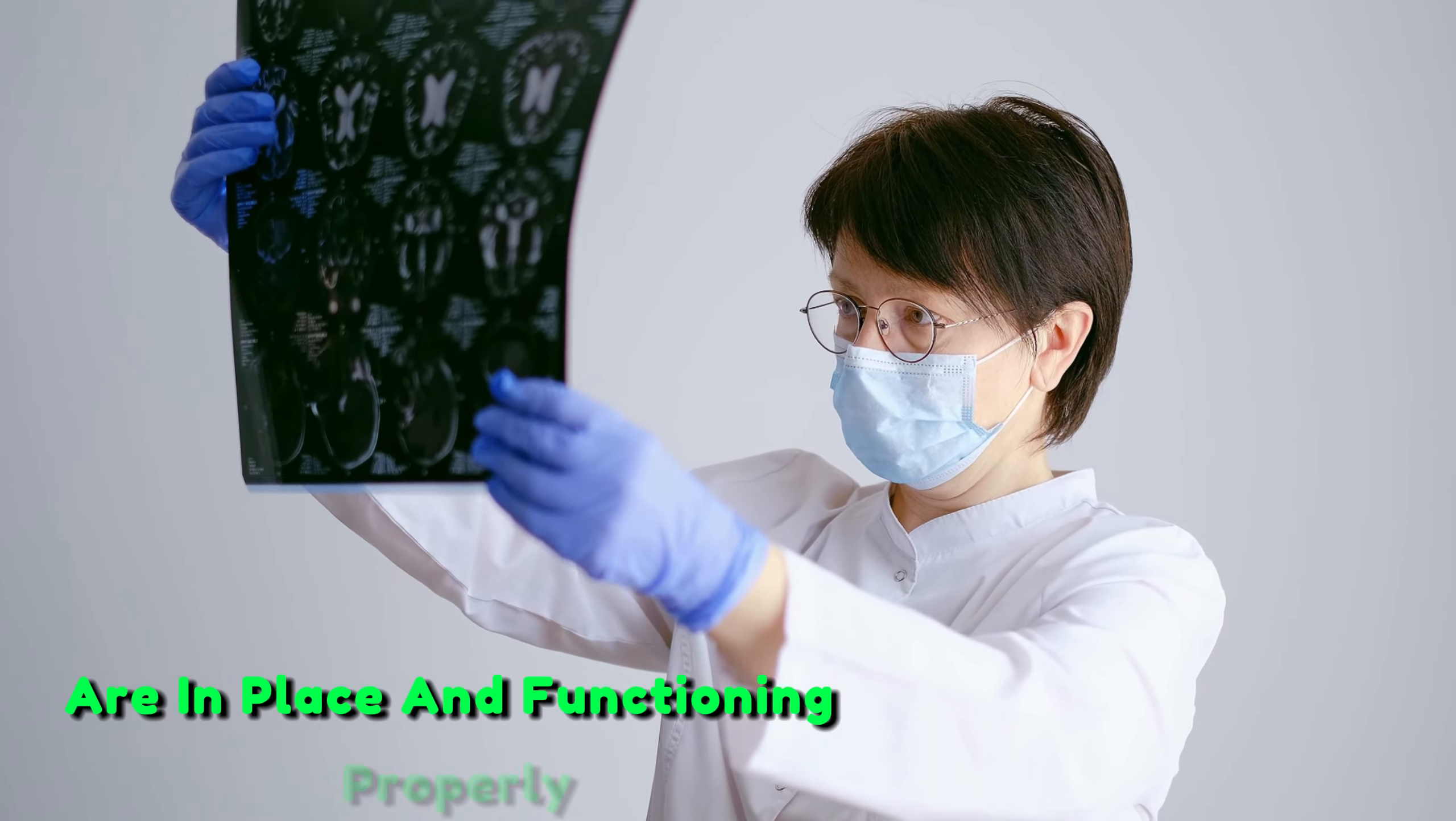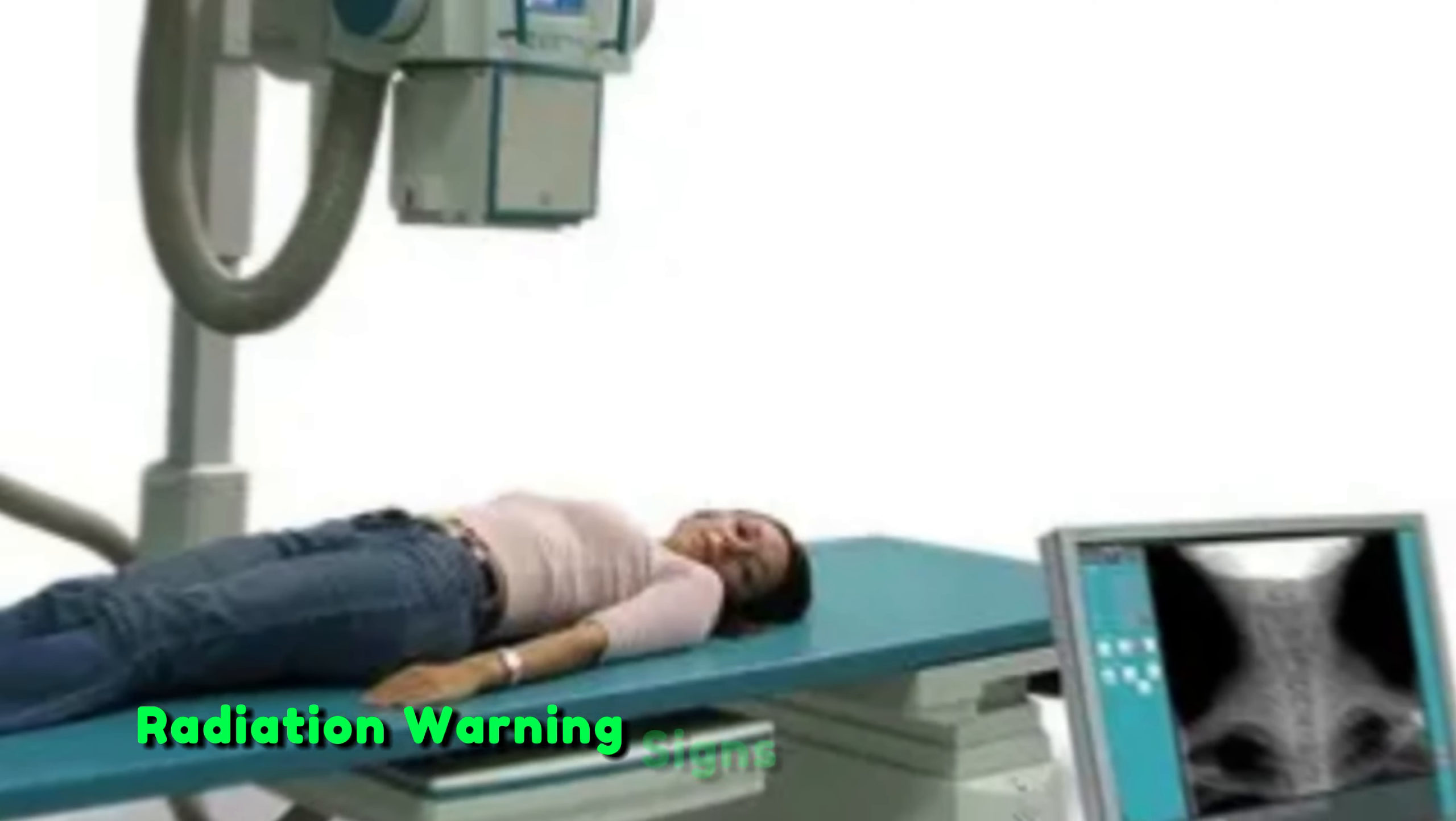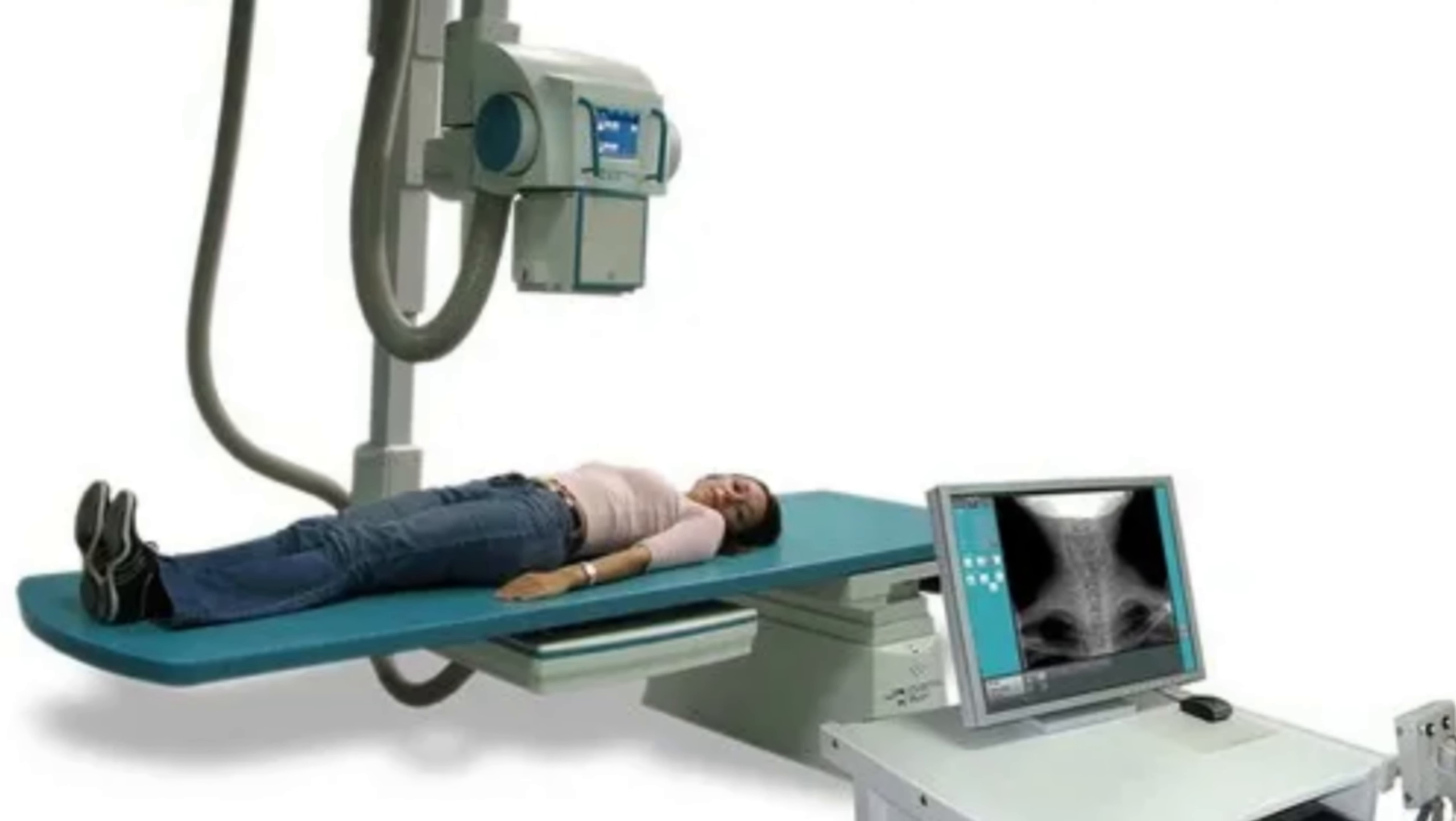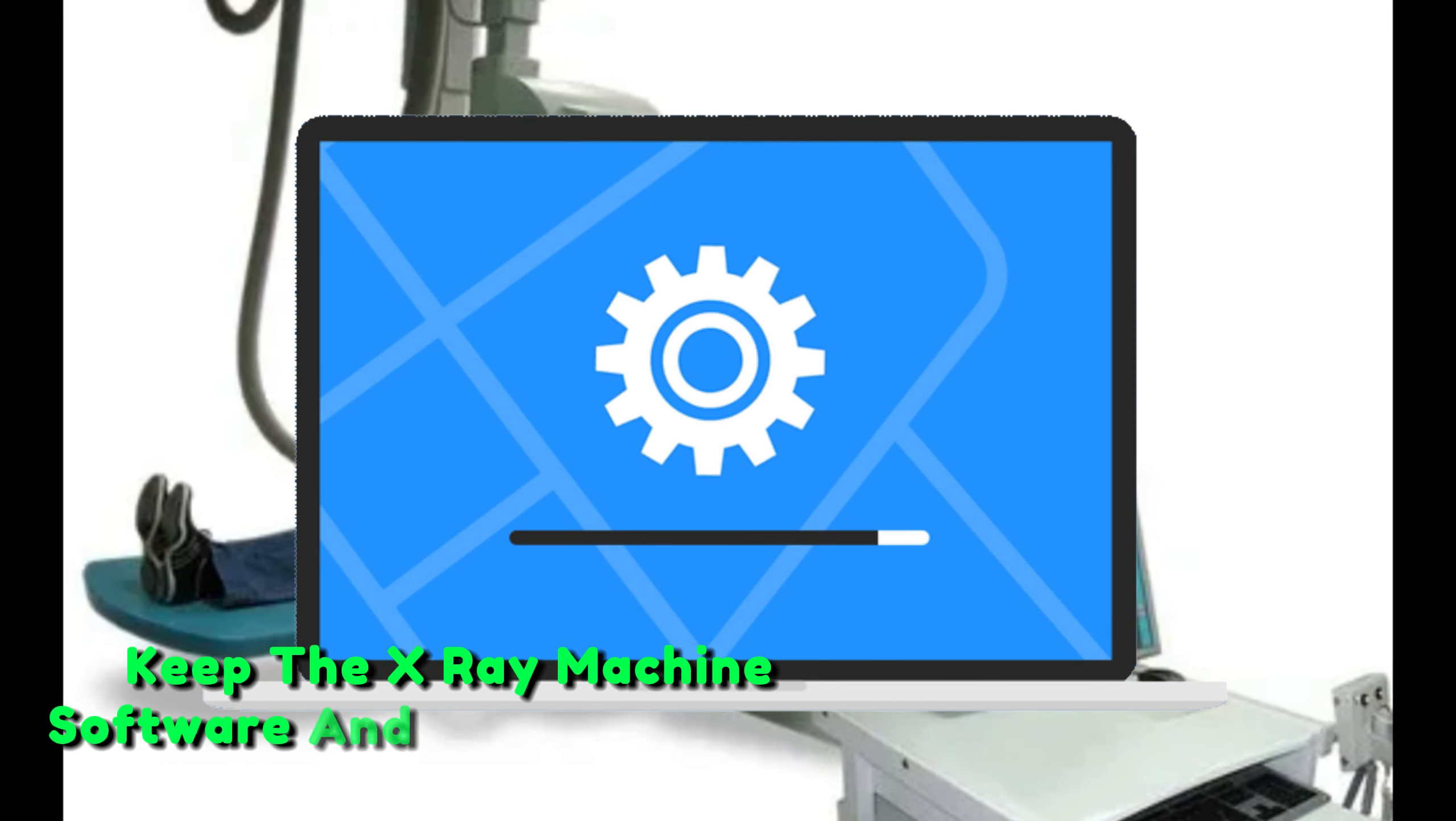Radiation safety measures. Ensure that all radiation safety measures are in place and functioning properly. This includes checking lead shielding, radiation warning signs, and emergency shut-off mechanisms.